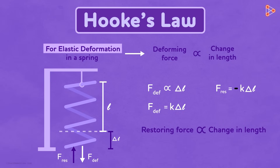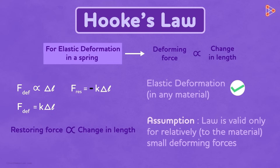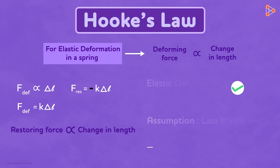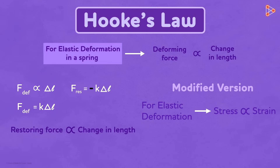This law is not only valid for elastic deformation in a spring — it is also valid for elastic deformation in any material. There is an assumption that this law is valid when the forces and deformations are relatively small. There is also a modified version of Hooke's Law, which says that in an elastic deformation, the stress experienced by a body is directly proportional to strain. We need to understand what stress and strain mean, and we will do that in the next video.